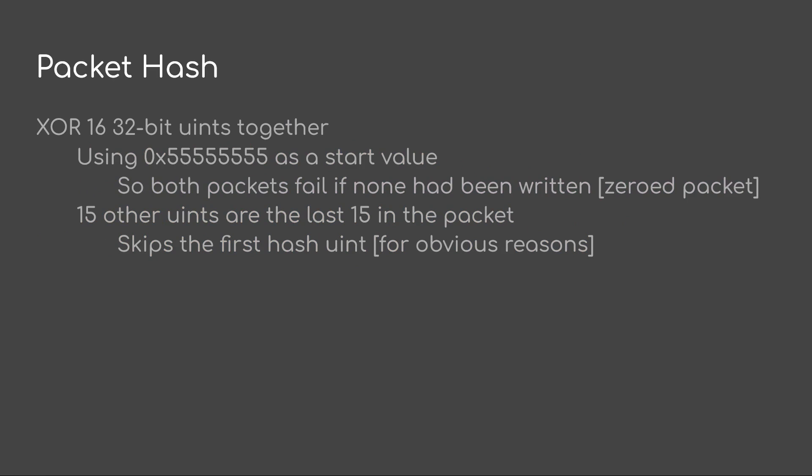And lastly, the packet hash. I do something very simple — I just XOR 16 32-bit UINTs together. I use 0x55555555 as a startup value, basically so that both packets fail if none had ever been written, because if it's all zero the hash is going to fail. The other 15 values are the last 15 UINTs in the packet — obviously skipping the first hash UINT.